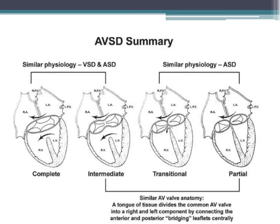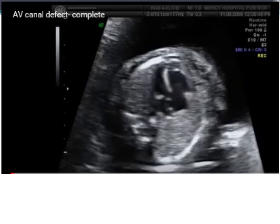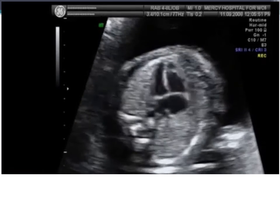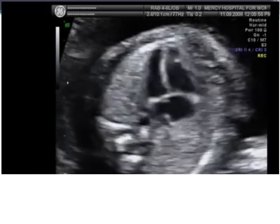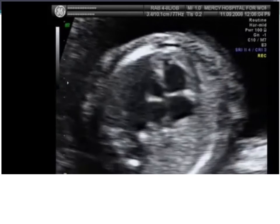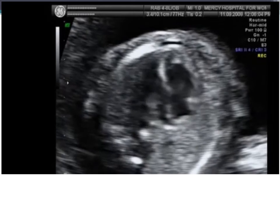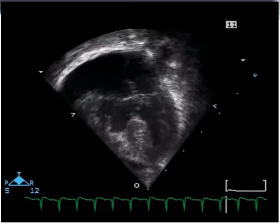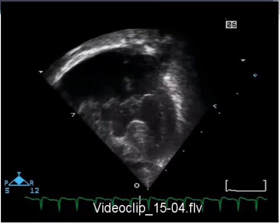There are many types of AV canals — complete, intermediate, transitional, and partial. In the complete AV canal, there is one annulus and two opportunities for shunting at the atrial and ventricular levels. AV canals can be picked up in utero on fetal ultrasound as one common AV valve with flow through the ventricular and atrial septa. On apical four-chamber echocardiographic view, you can see a secundum ASD, inlet VSD, and primum ASD in a complete AV canal.